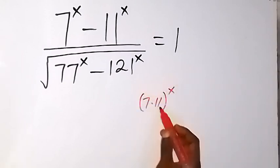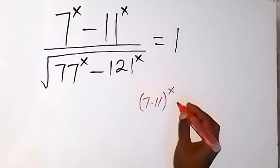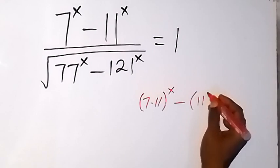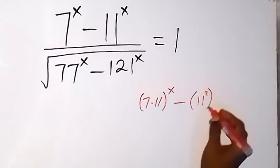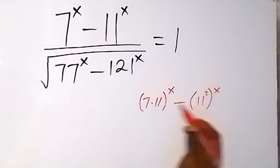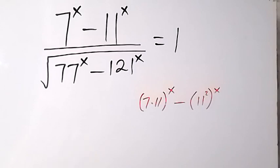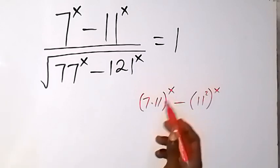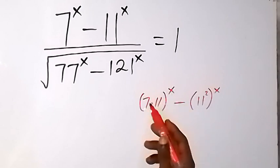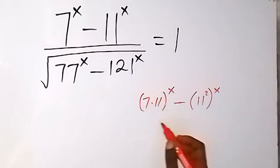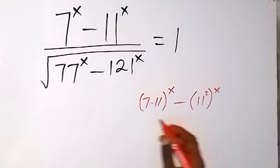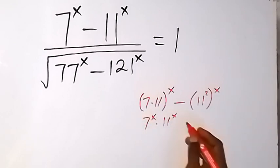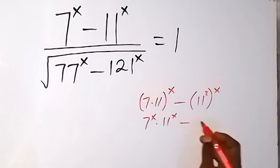So 7 times 11 is still 77. Then we can write 121 as 11 raised to power 2, then raised to power x. So 11 squared is 121. And from here, we know from the law of indices that the power x will affect these two numbers. So we can write it as 7 raised to power x times 11 raised to power x, then we have minus.